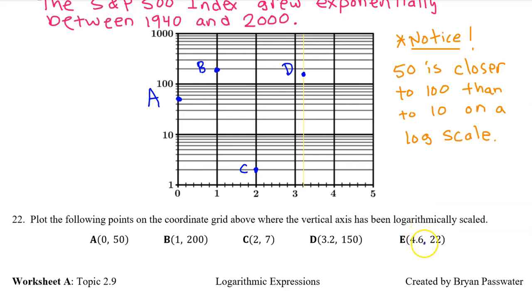Finally point E, 4.6. This goes 4.2, 4.6 so I'm going to put my yellow line right here. So the input is here at 4.6. Now the output of 22 is going to be past 10. As we pass 10, we count by tens. So the bold line is 10 and then it goes 20, 30, 40 after that. So this first line after 10 is 20. So 22 is just going to be a teeny tiny bit above that. So this is point E.